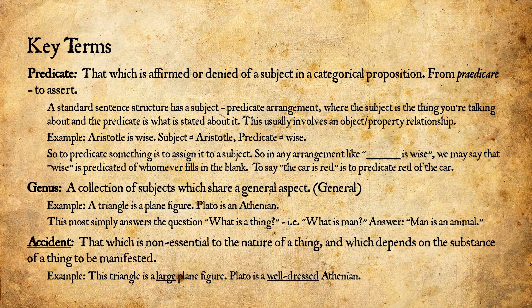Genus is a collection of subjects which share a general aspect — that's where we get the word 'general' from 'genus.' For example, a triangle is a plane figure — that's what kind of thing a triangle is. Plato is an Athenian — that's the kind of person Plato is. The genus of triangles is plane figures; Plato belongs to the genus of Athenians. This most simply answers the question: what is a thing?